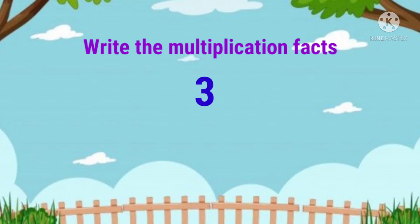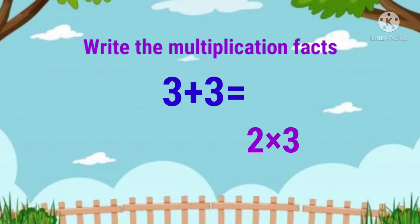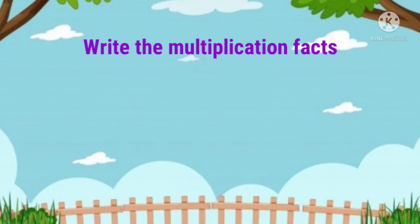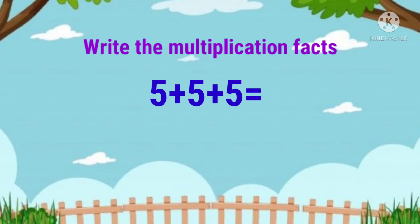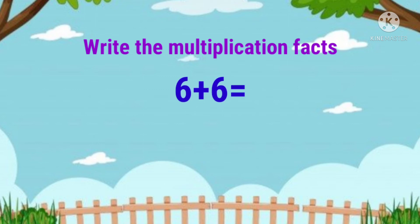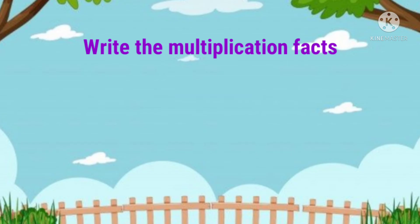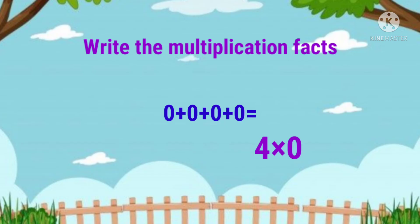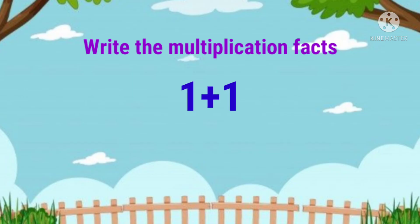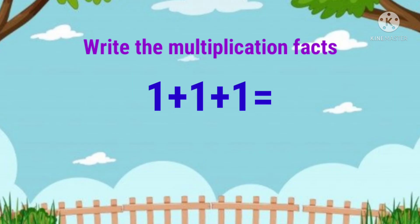3 plus 3 is equal to 2 into 3. 5 plus 5 plus 5 plus 5 is equal to 3 into 5. 6 plus 6 is equal to 2 into 6. 0 plus 0 plus 0 plus 0 is equal to 4 into 0. 1 plus 1 plus 1 plus 1 is equal to 3 into 1.